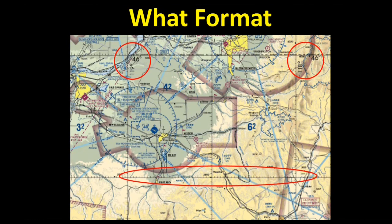Not so long ago, degrees decimal minutes was the preferred format for aircraft, because it was the location system used in sectionals — the maps that pilots use. The system is still used, and most pilots carry old-fashioned paper sectionals with them, much like a searcher always having a paper map as a backup to their GPS system. You can see this format displayed on a sectional map in Pendleton here. You will note that there are 60 tick marks between the lines of longitude — they represent minutes — and there is not enough room to divide them further, which is why degrees decimal minutes is the preferred format.